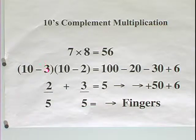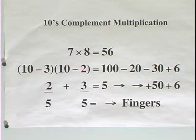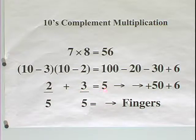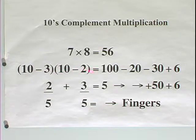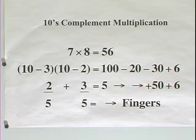Now if there are 3 fingers open, there must be 2 closed. If there are 2 fingers open, there must be 3 closed. So if we add the closed fingers, 2 plus 3, we get 5, and that's the tens place. Multiplying the open fingers gives us the 6; adding the closed fingers gives us the 5, the tens place, and the ones place. So it is 56.